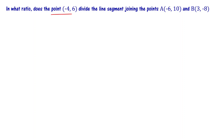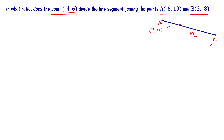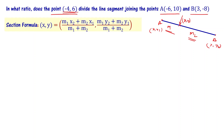Problem 1: In what ratio does the point minus 4 comma 6 divide the line segment joining point A, minus 6 comma 10, and B, that is 3 comma minus 8? We have to find what is the ratio in which it is dividing the line segment AB. Here, A has coordinates x1 comma y1, B has coordinates x2 comma y2, and the section point has coordinates x comma y.